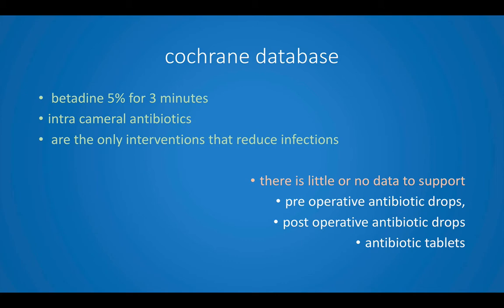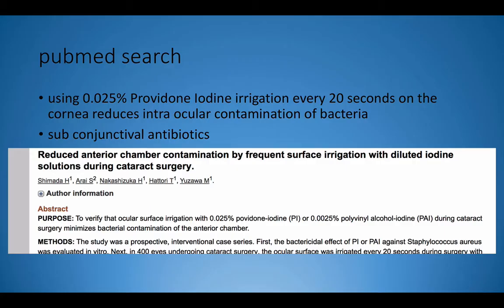Major eye hospitals in Chennai have completely stopped the use of preoperative and postoperative antibiotic drops and tablets in their cataract surgeries. Shimada et al. published two papers showing that using 0.025% povidone iodine irrigation — several drops to wet the cornea every 20 seconds — reduces intraocular contamination of bacteria in a small series of around 200 patients to nil. There is also some evidence that subconjunctival antibiotic gives a massive high dose in the early postoperative period, which seems to reduce infection rates.